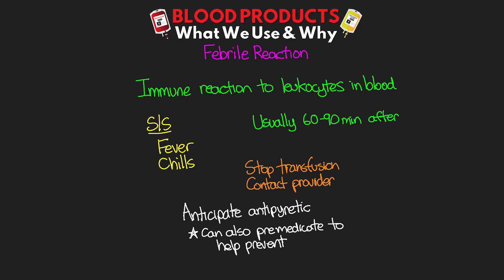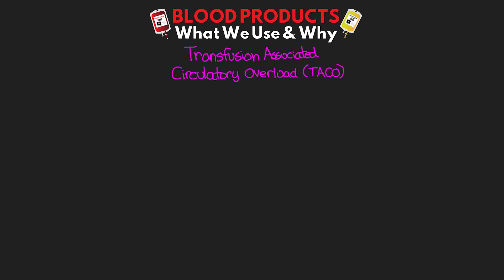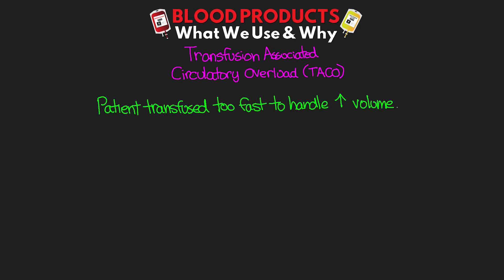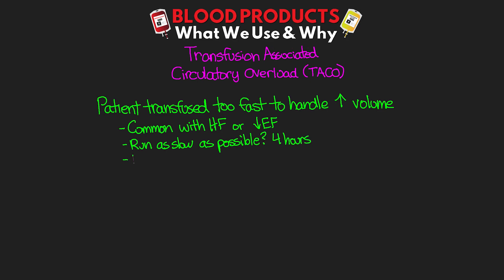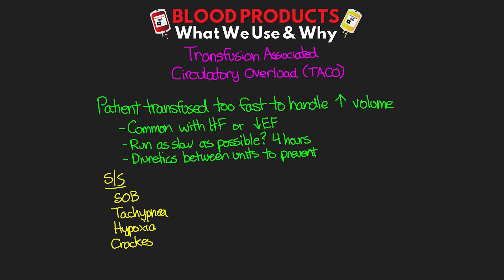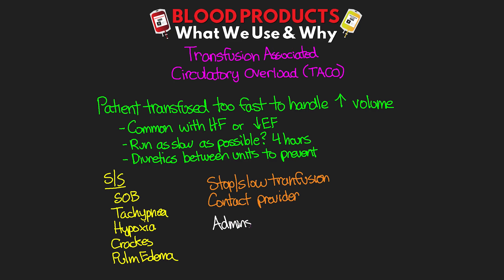The next reaction is something we refer to as TACO, or transfusion-associated circulatory overload. This is going to be the result of the patient being transfused too fast to handle that increase in volume. Commonly, this is going to be an issue in our patients with heart failure or those with a reduced ejection fraction. In these cases, it may require running the blood as slow as possible over the entire four hours, and diuretics such as Lasix can be given between units to help prevent this. Signs and symptoms include shortness of breath, tachypnea, hypoxia, crackles in the lungs, and pulmonary edema. We're either going to need to stop or slow the infusion and contact the provider. Administer oxygen for hypoxia and be prepared to give a diuretic. TACO is going to be less of a concern in our acutely bleeding patients, as they're often going to be intravascularly depleted.